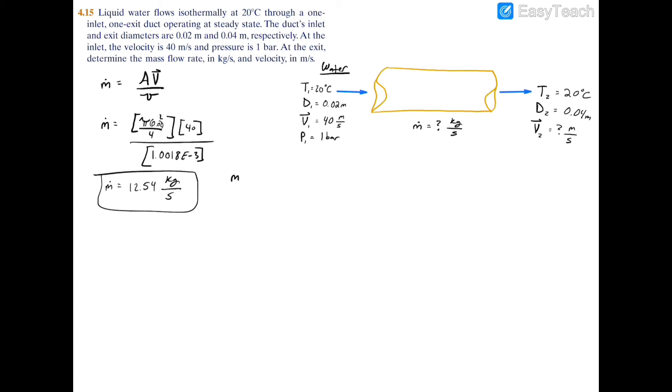Now remember that because you have a single inlet and a single exit, you have m1 equals m2. Therefore, we can use this expression to find the velocity at 2. If we arrange it for the velocity at 2, we'll have v2 equals the mass flow rate times the specific volume at 2 divided by the area at 2.